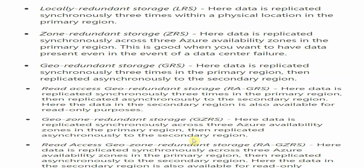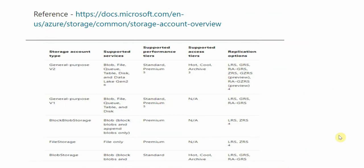There are also Geo-Zone Redundant Storage types based on replication. This reference chart is taken from the Microsoft documentation and shows storage account types, their supported services, supported performance tiers, access tiers, and replication techniques. For example, General Purpose v2 supports all services and tiers, while File Storage supports premium performance and specific redundancy options.